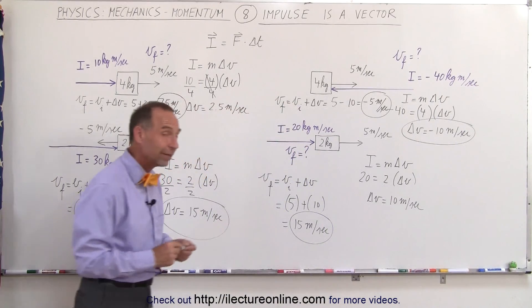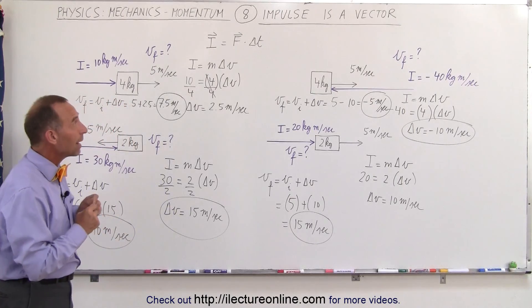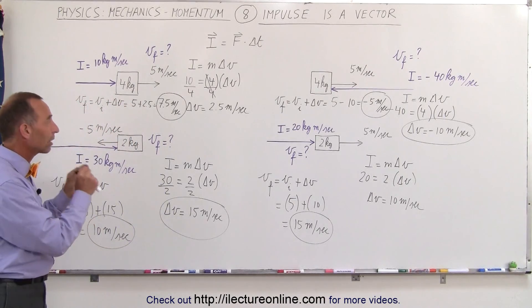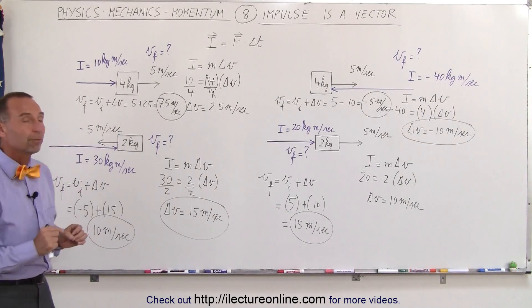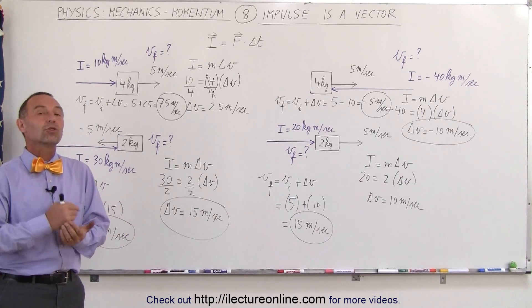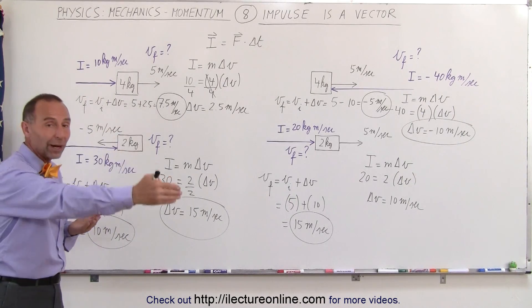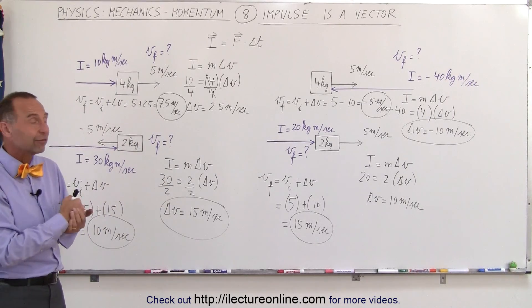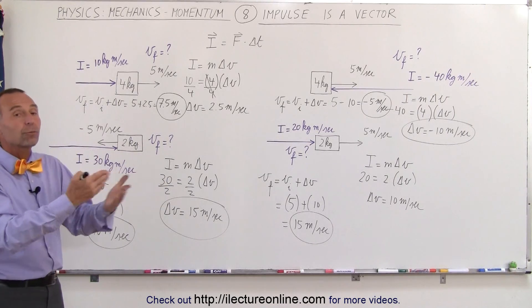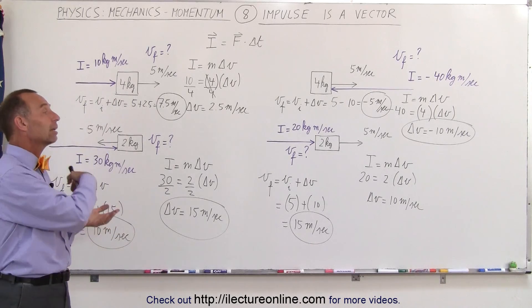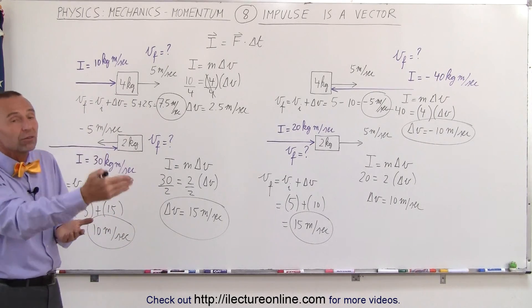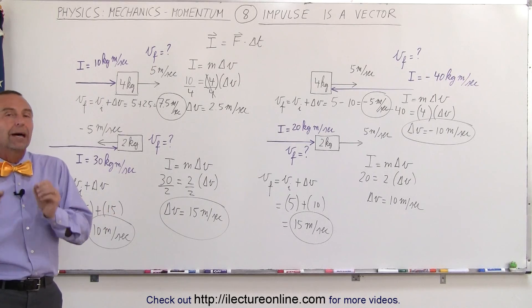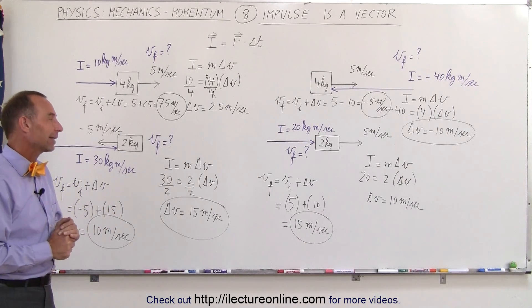That's why we have to keep in mind that when dealing with impulse, it's a vector quantity and direction is important. A positive impulse changes velocity to the right; a negative impulse changes it toward the left. It can give a greater negative velocity, or may change a positive velocity into a negative velocity, depending on which direction the impulse is acting.